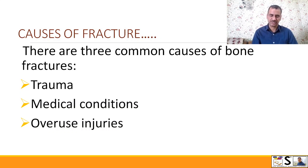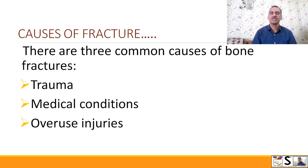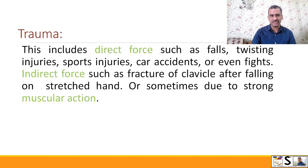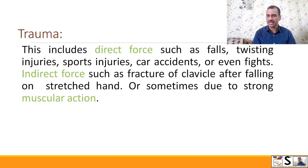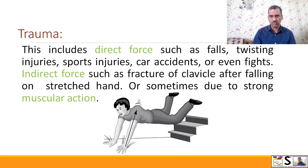What are the causes of fractures? There are three main causes of bone fracture. Fracture may occur due to trauma to a body part, due to medical conditions, or sometimes overuse injury. The first cause is trauma. This includes direct force such as fall, twisting injury, sports injury, car accidents, or even a fight. Indirect force such as fracture of the clavicle after falling on a stretched hand, or sometimes due to strong muscular action.